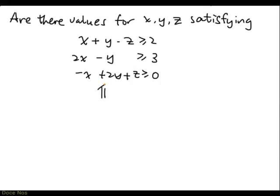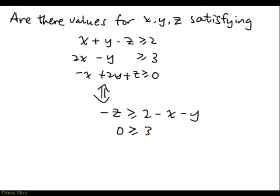What we're going to do is rewrite the first inequality as minus z greater than or equal to 2 minus x minus y. We don't really care about the second inequality's z term, so we bring everything over: 0 greater than or equal to 3 minus 2x plus y. And the last inequality with z on the left-hand side will look like z greater than or equal to x minus 2y.